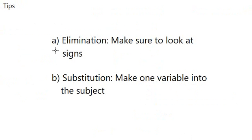Alright, so for elimination, make sure that you know what the sign is. It's not the trigonometry function sine. It is a positive or negative number. So that you can find if you need to add the equation or subtract the equation. For substitution, just turn one of the variable into the subject and you are good to go.